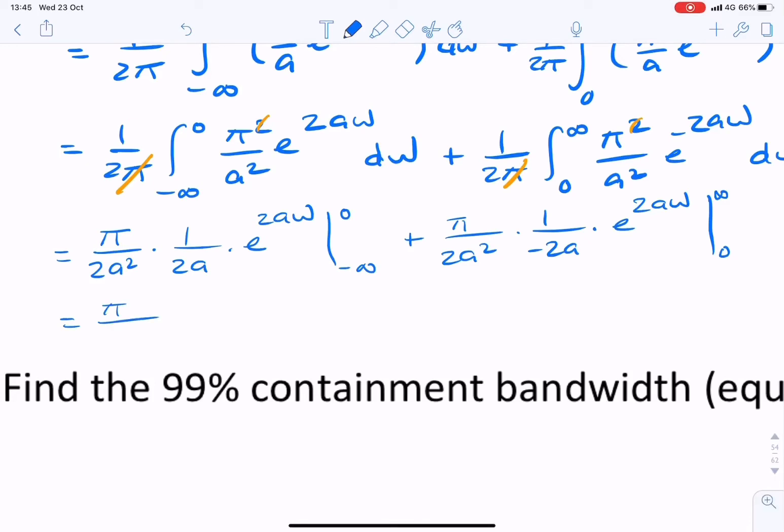So that gives me π over 2a over 4a cubed, into e to the power 0 is 1, so that's 1. E to the power minus infinity to 0, and we have another plus, so it will be minus, minus, so plus 1. So we'll end up with π over 2a cubed. So that's my final expression for the energy. And I found this energy in the frequency domain.